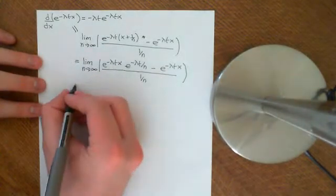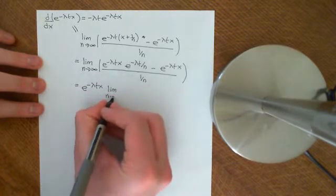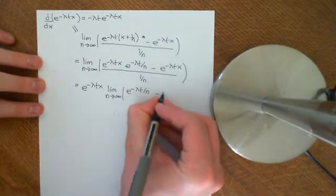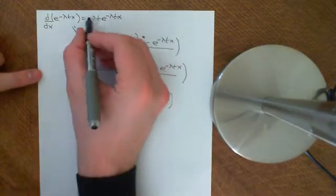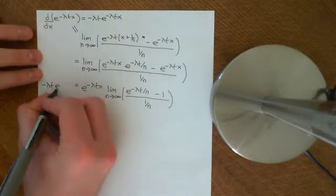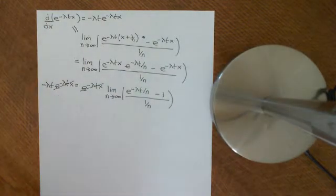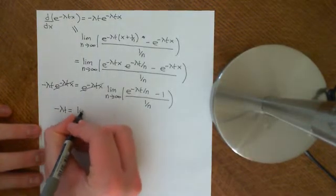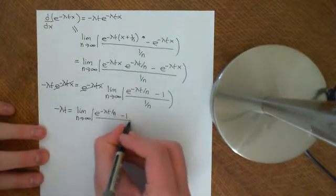Now pull out the e to the negative lambda t x — it plays no part in the limit. So we get e to the negative lambda t x times the limit as n approaches infinity of e to the negative lambda t over n, minus 1, over 1 over n. This was going to be equal to negative lambda t times e to the negative lambda t x. We can cancel e to the negative lambda t x off both sides, because it's always positive, so we can divide both sides by it. So we get that negative lambda t is equal to the limit as n approaches infinity of e to the negative lambda t over n minus 1, divided by 1 over n.